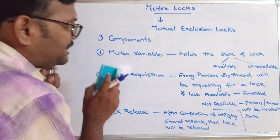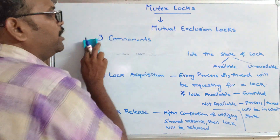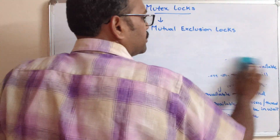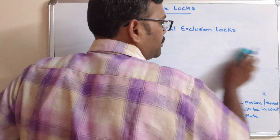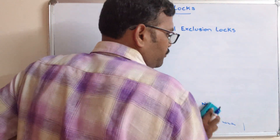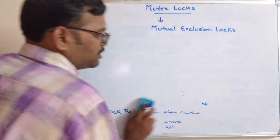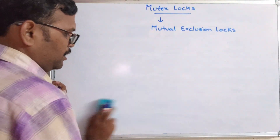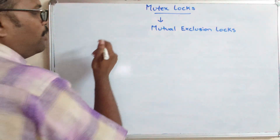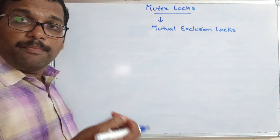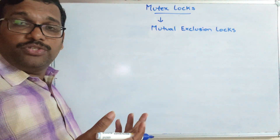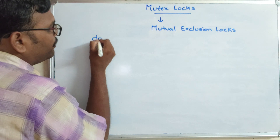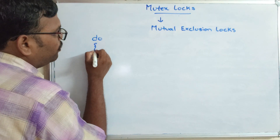Now let us see the code of mutex locks. A common thing we have seen in Peterson's solution is the infinite loop.